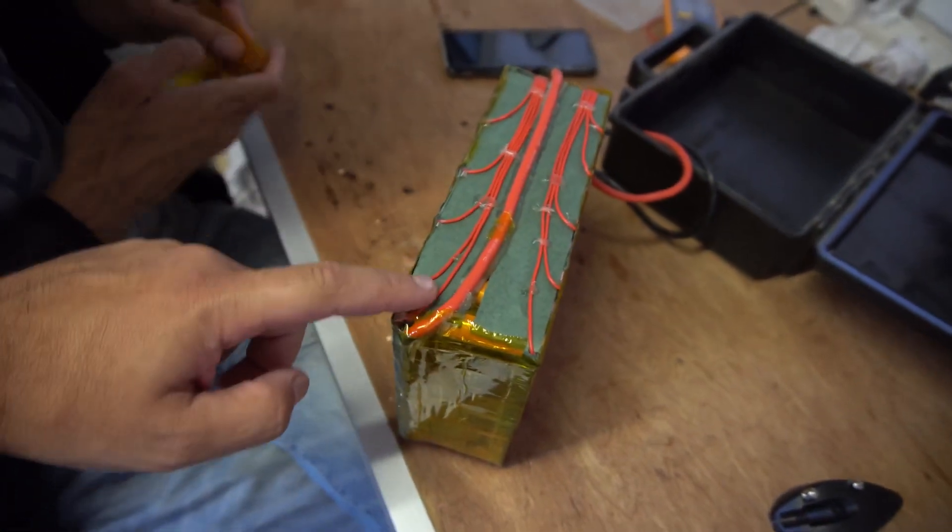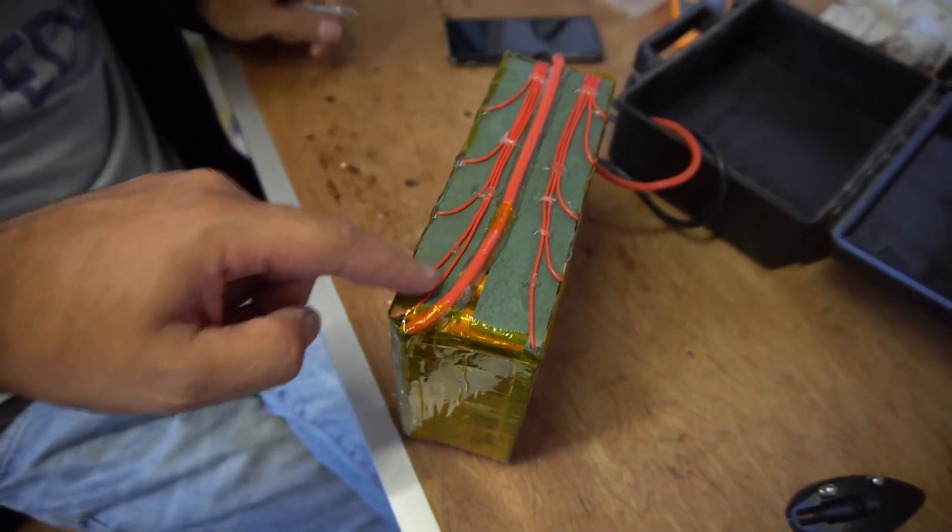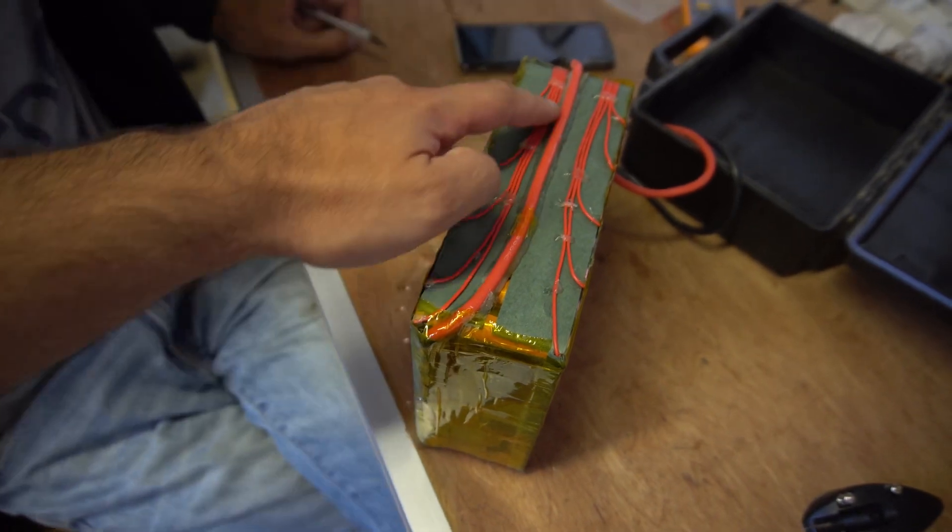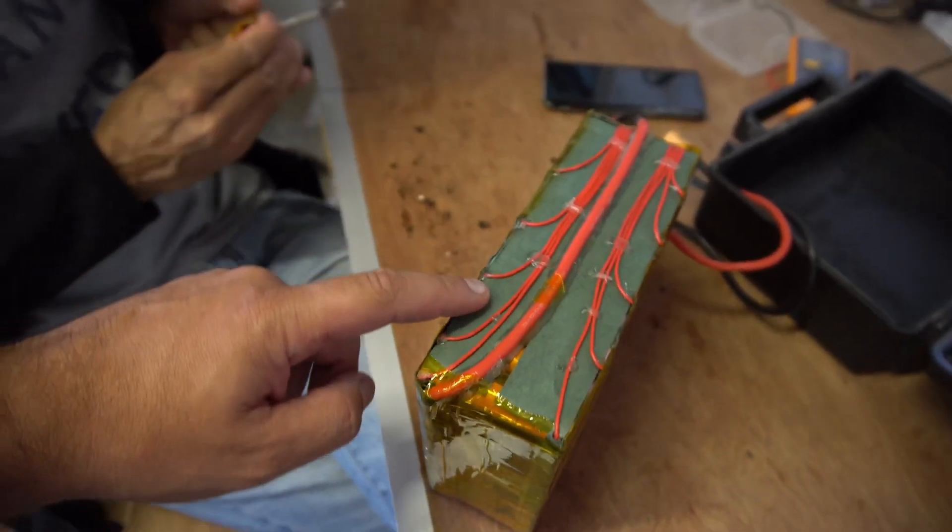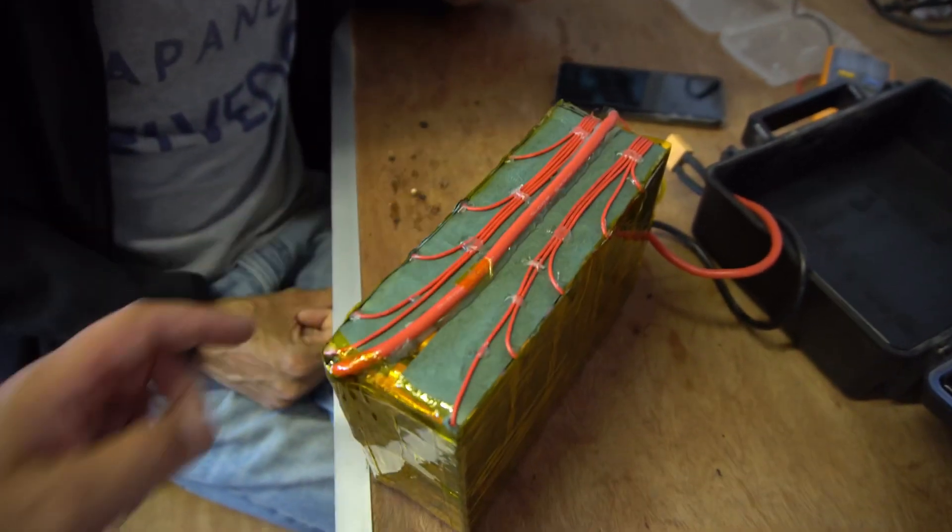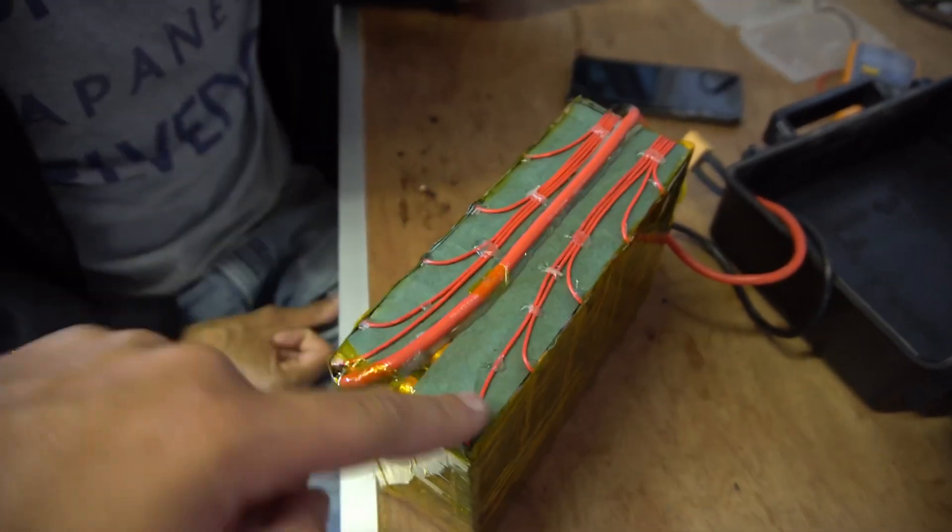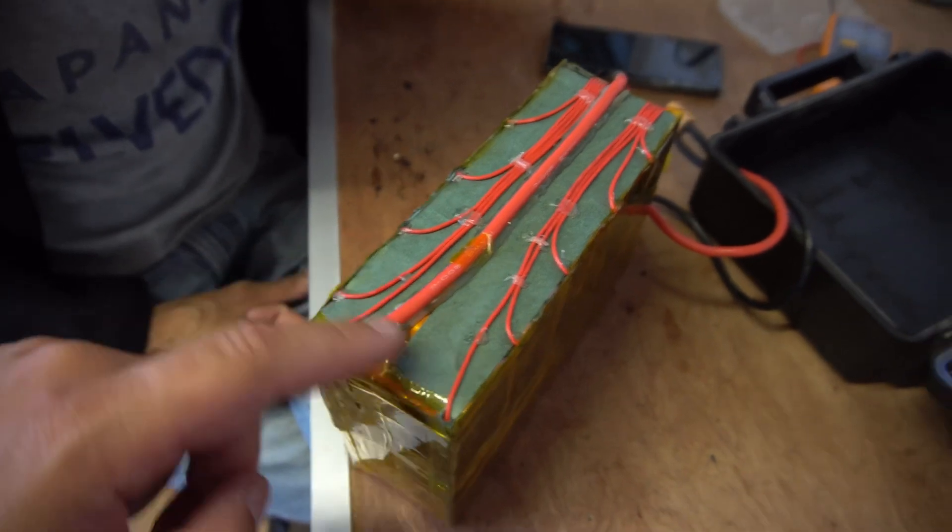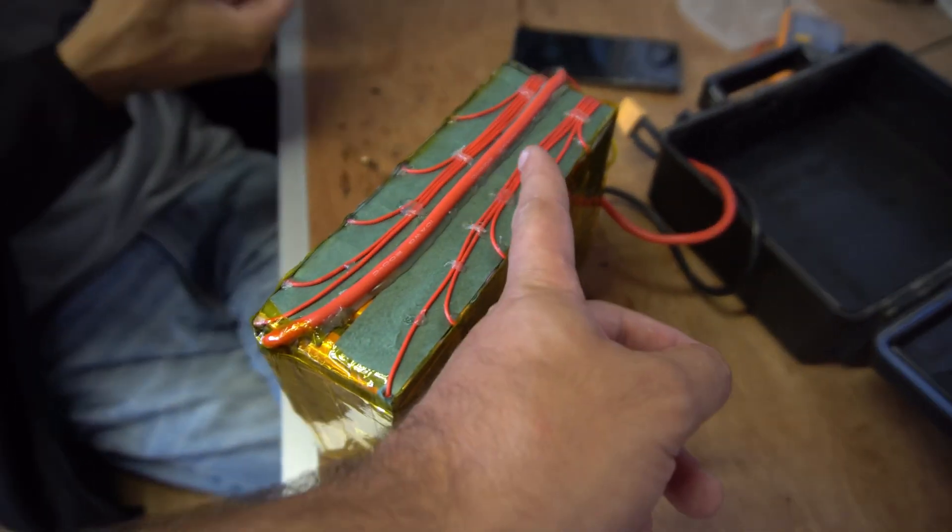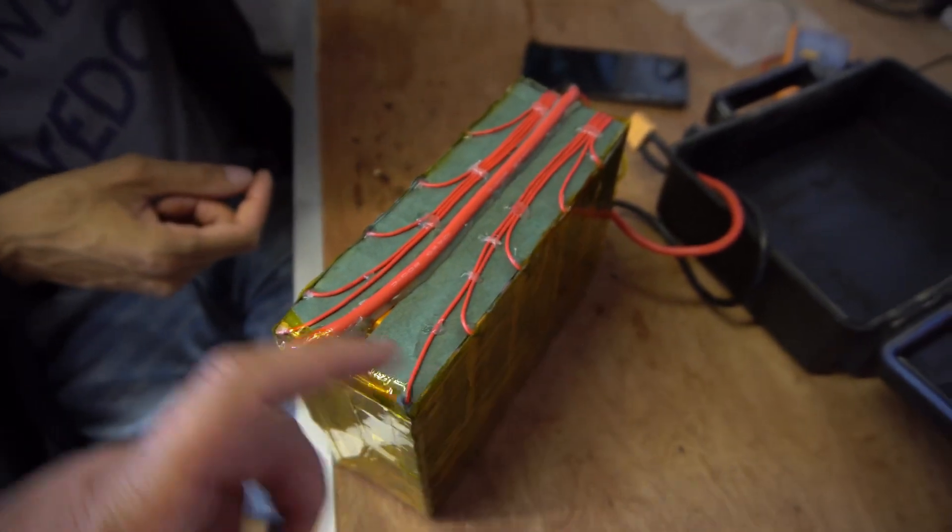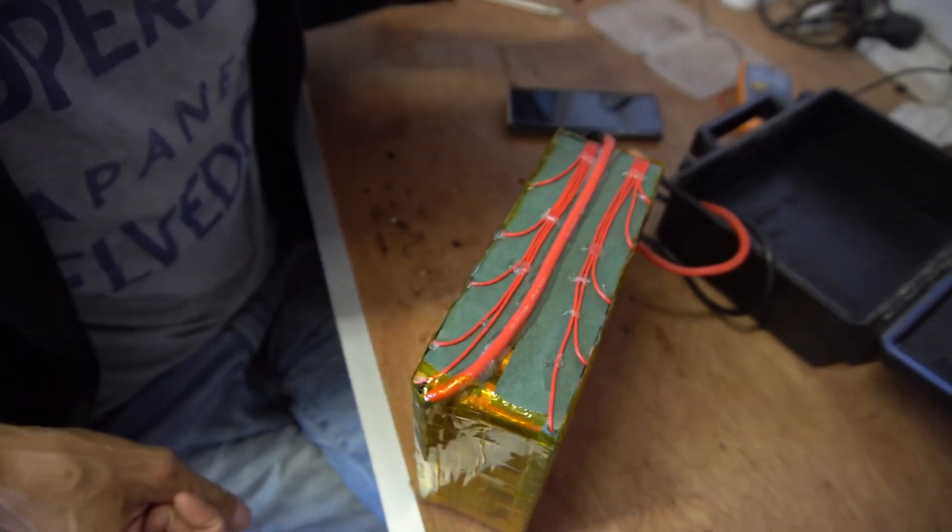See guys, when you design a pack, the balance leads, see what Mo's done here, he's made sure that they're not going to rub on each other at all. He's made them all parallel and he's actually glued them down and they're on fish paper and then there was insulation on top of it. That is the way to do balance cables correctly. This is the best way. Most battery fires are started by these cables rubbing on each other from vibration, so there's no way that's going to happen on this one. Good job Mo.